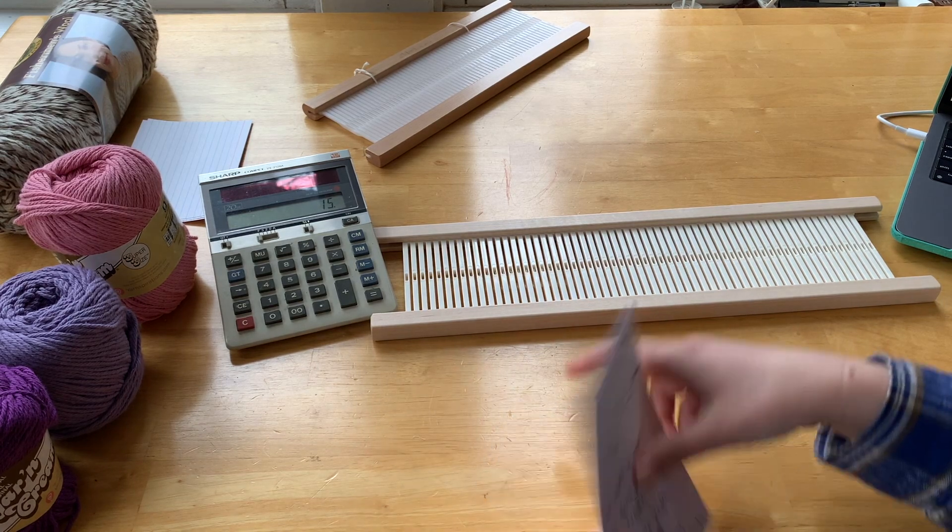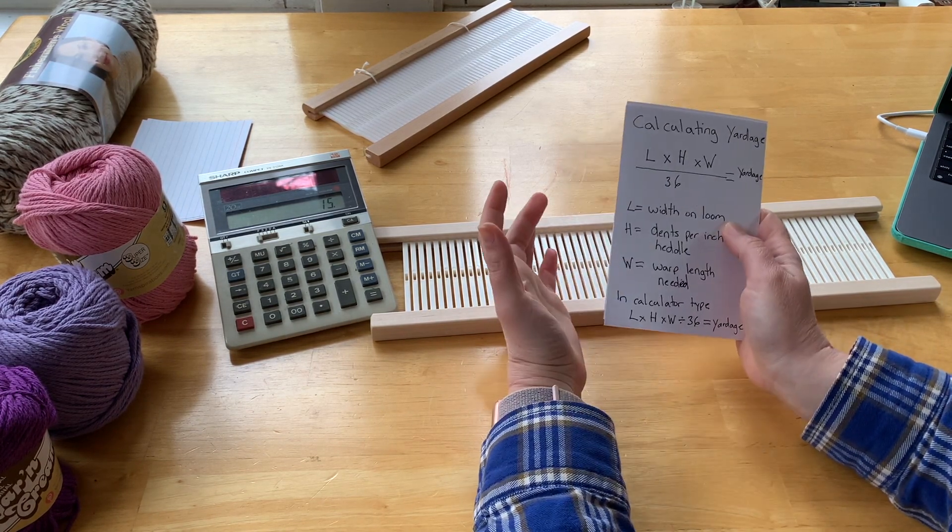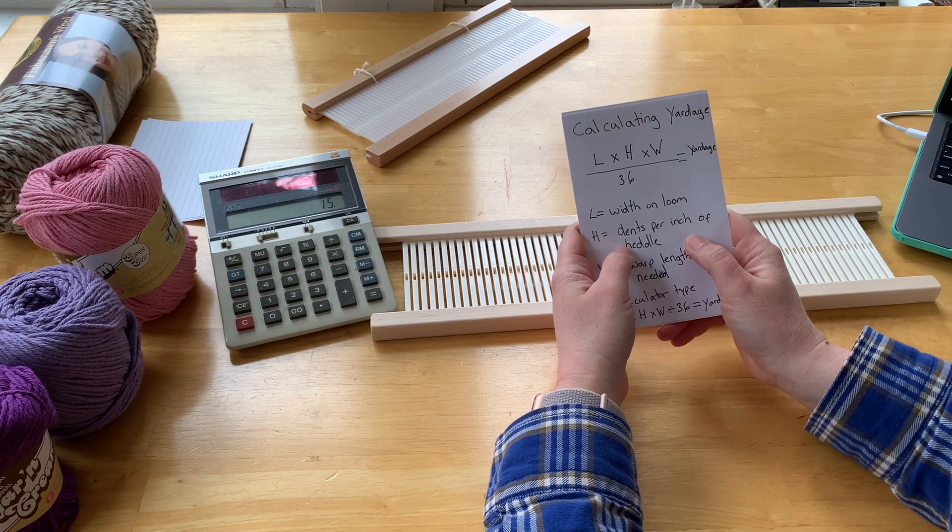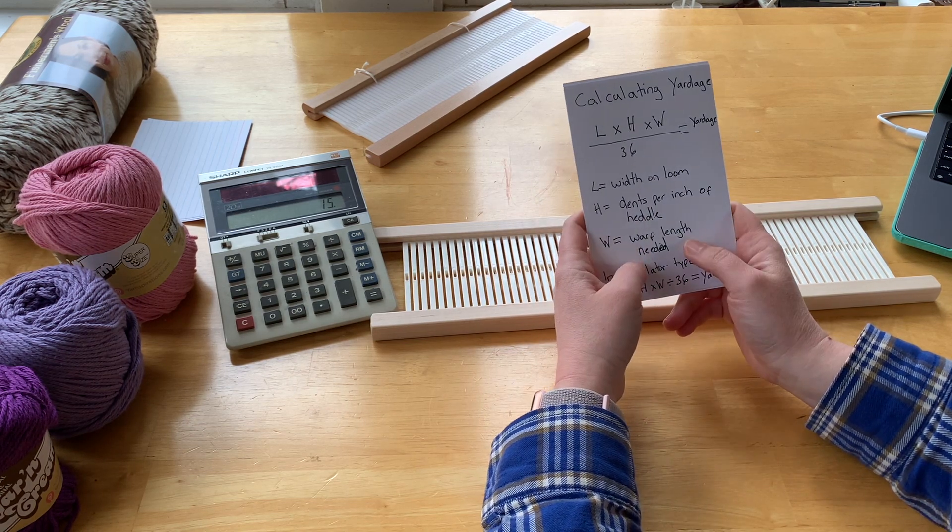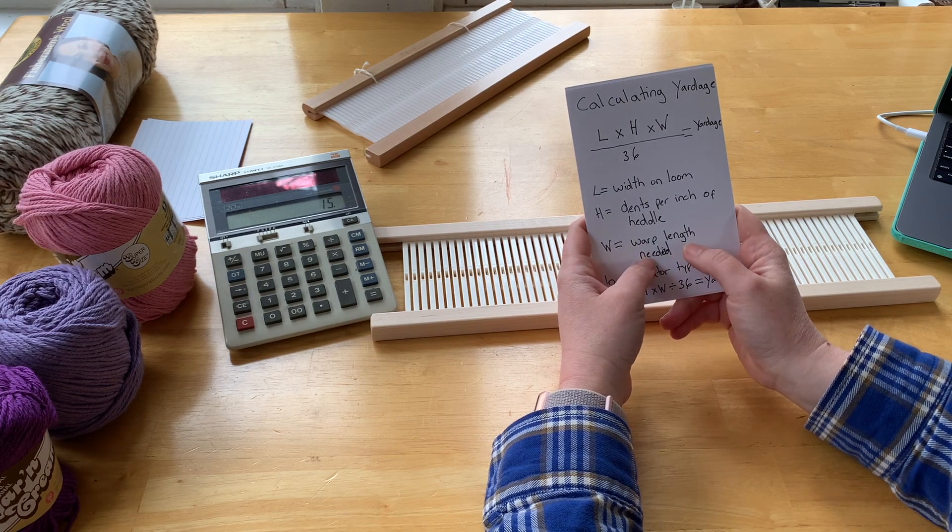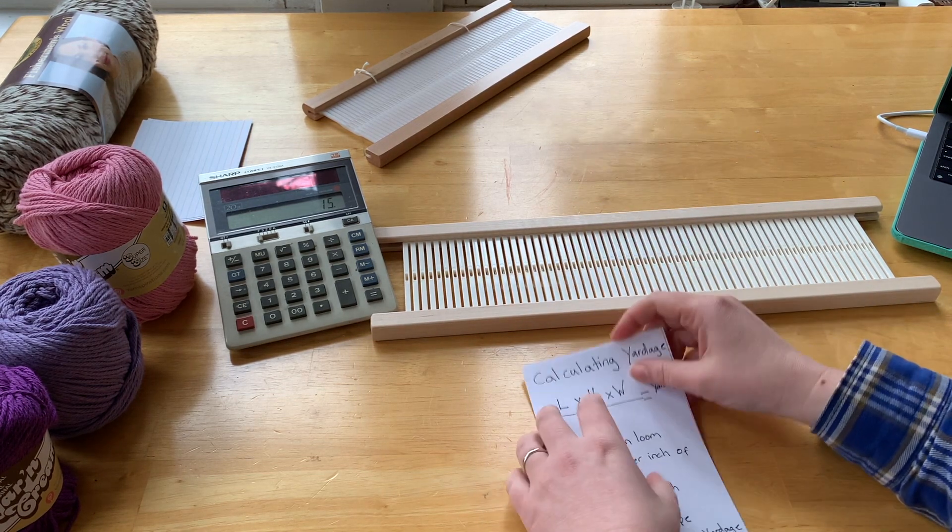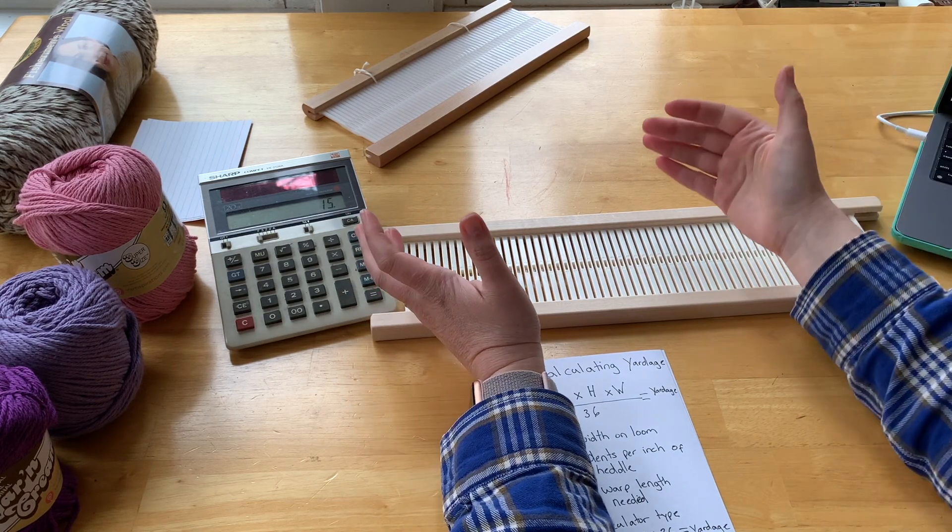So anyways, calculating yardage: you're going to take the width you want on the loom, 30 inches in my case, and you're going to times it by the dents per inch of the heddle, 8, and then you're going to times that by the warp length you need for the final project.